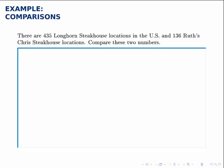Here's another comparison problem. We're told that there are 435 Longhorn Steakhouse locations in the U.S. and 136 locations of Ruth's Chris Steakhouse, and we're asked to compare these two numbers.